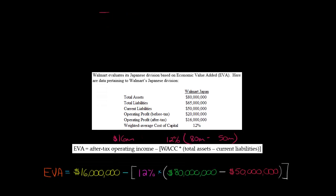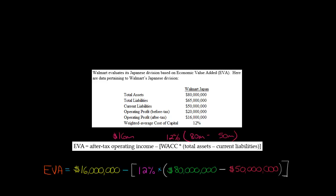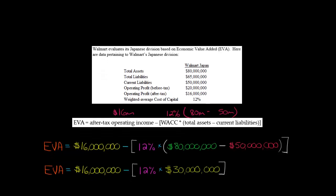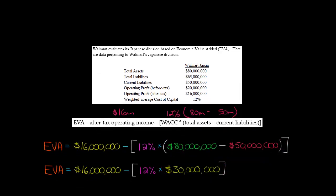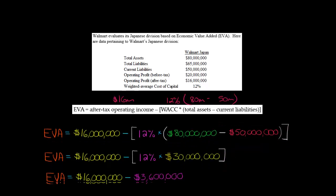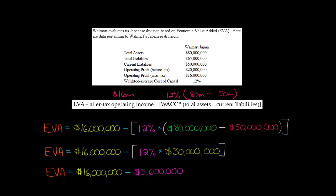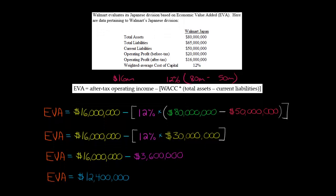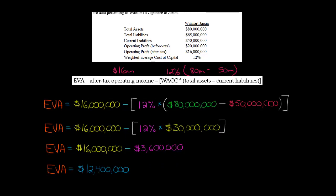So if we do the math, total assets minus current liabilities collapses into $30 million. We multiply that by 12%, the weighted average cost of capital, and we get $3.6 million. Then when we subtract the $3.6 million from the $16 million NOPAT, we get $12,400,000, which is our economic value added.